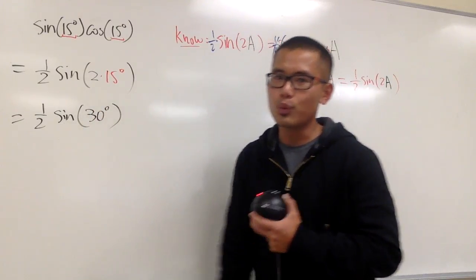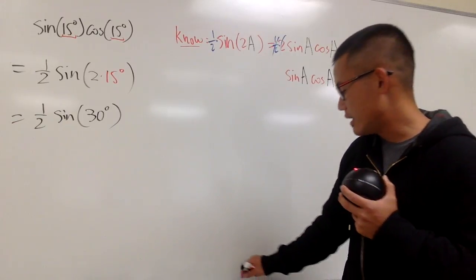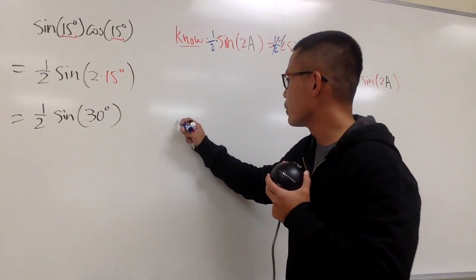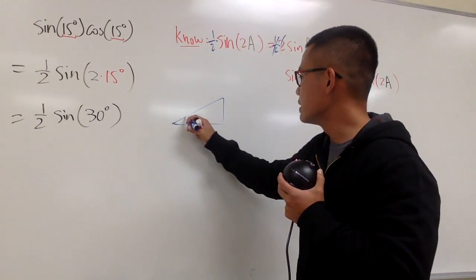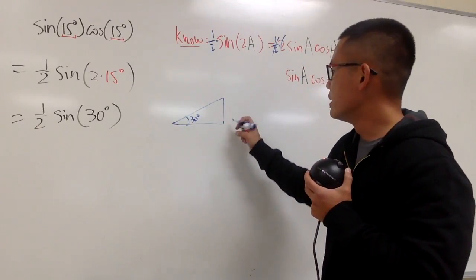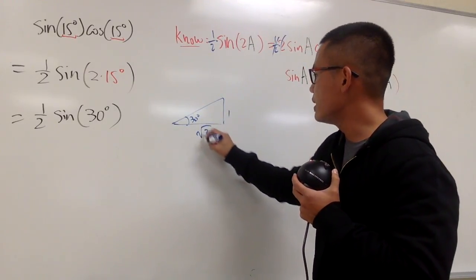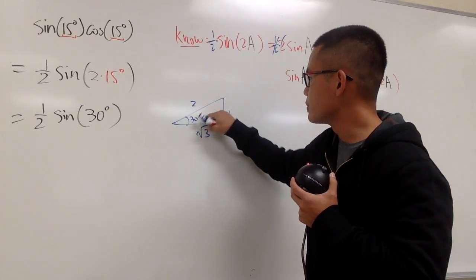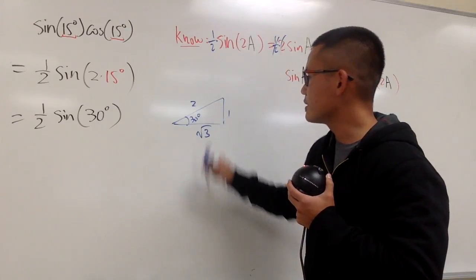And we can figure out what's sine of 30 degrees. Let's go ahead and look at the triangle real quick. So this is my 30 degree angle. And then we will have, this is 1, this is square root of 3, and this is 2. Let me just write down the angle better like this.